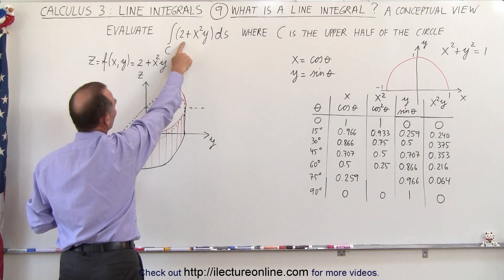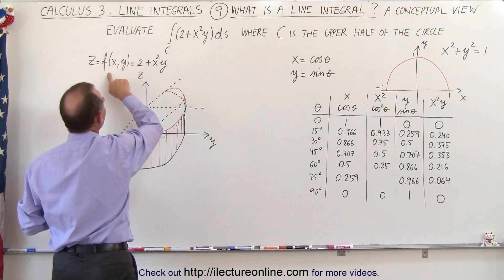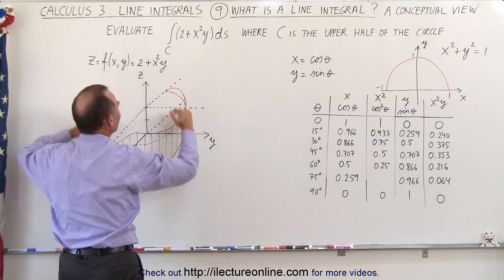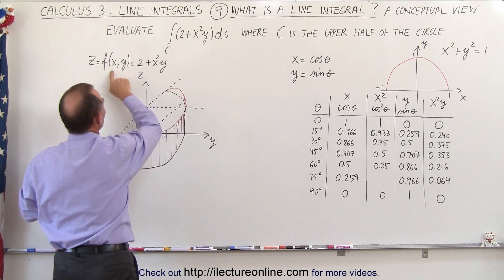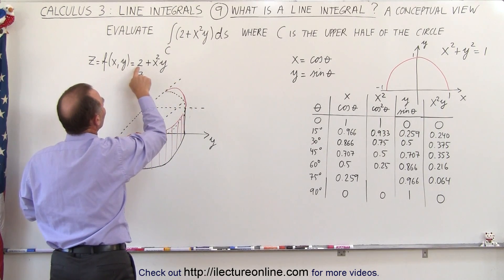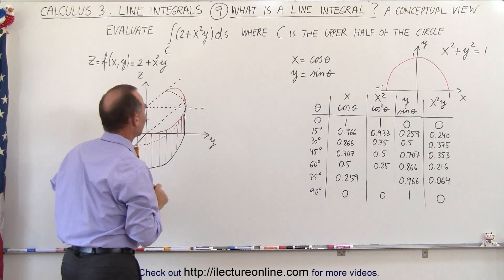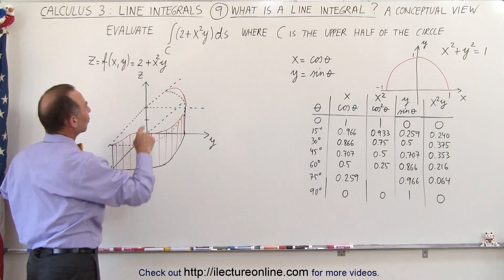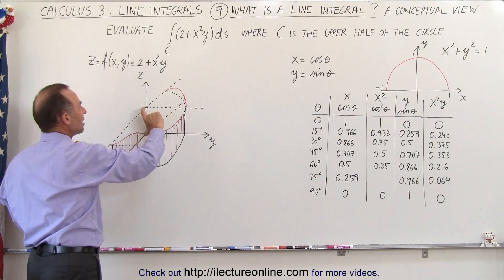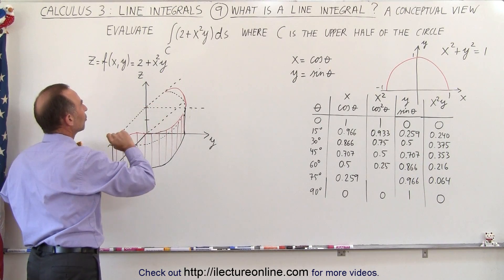So the equation here is really z as a function of x and y, so it's the height above the xy axis as a function of position x and y, and is defined as z equals 2 plus x squared y. You can see that when x and y are 0, the height of z is 2 units above the origin.